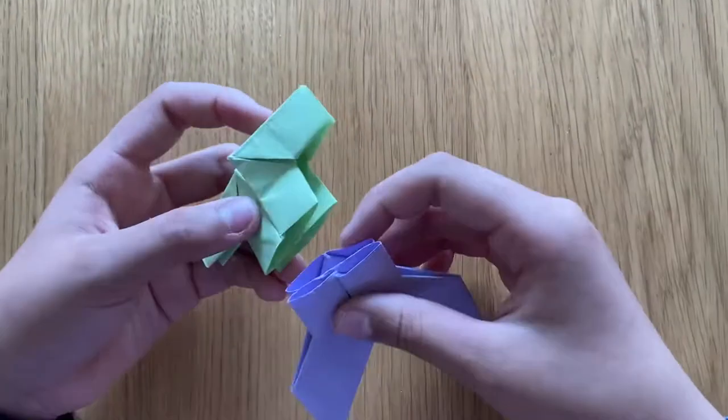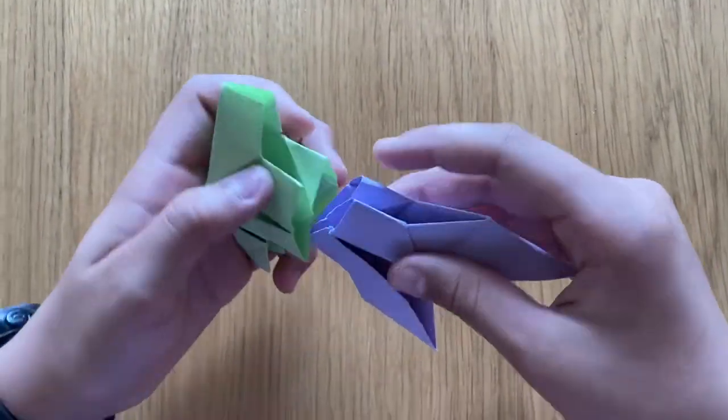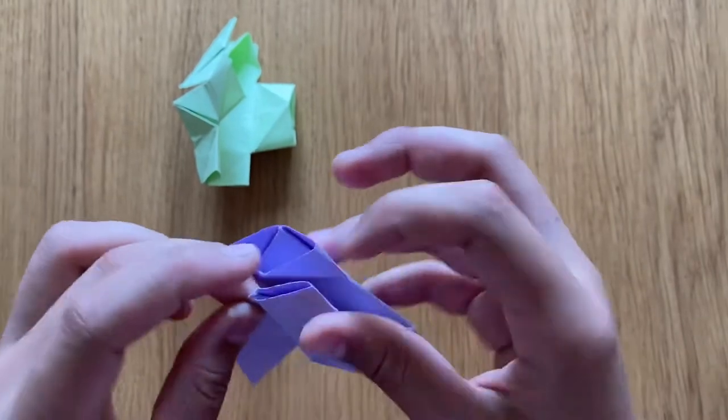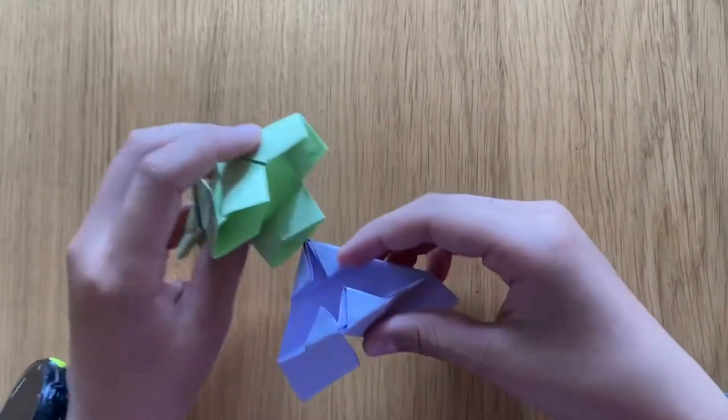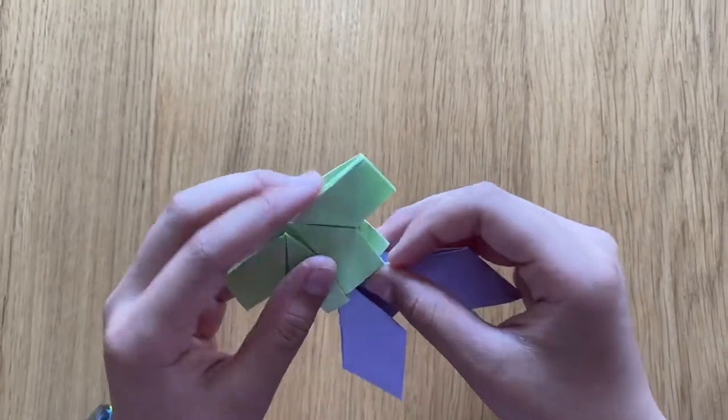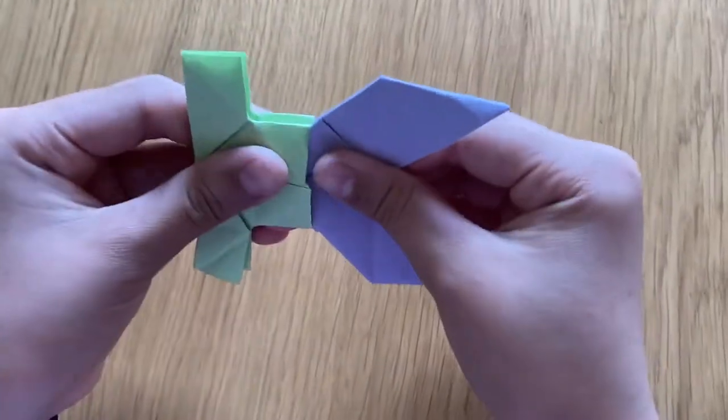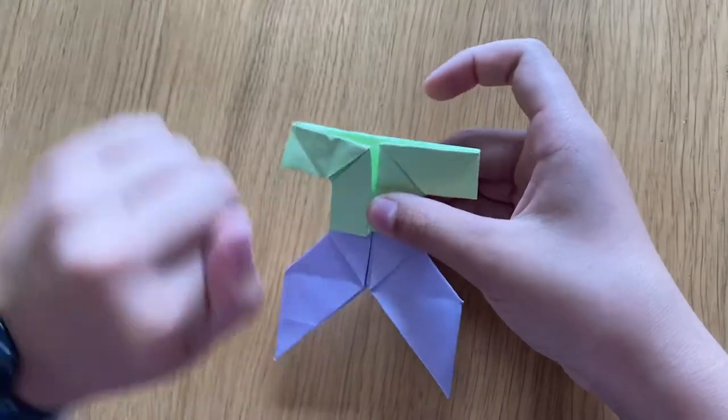And the thing is, you can put them actually in together just by doing something like this and this. And there we go, a t-shirt and trousers! Maybe in later videos we can add a head on it.